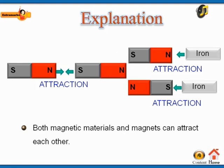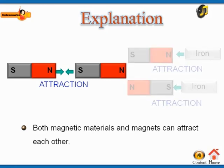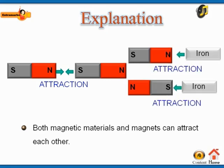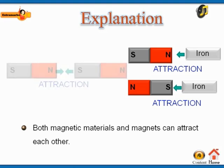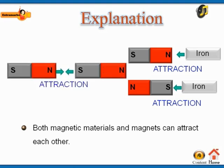Magnetic materials such as iron, nickel, etc. get attracted towards both the poles of a magnet, while two magnets get attracted towards each other when their unlike poles are brought closer.